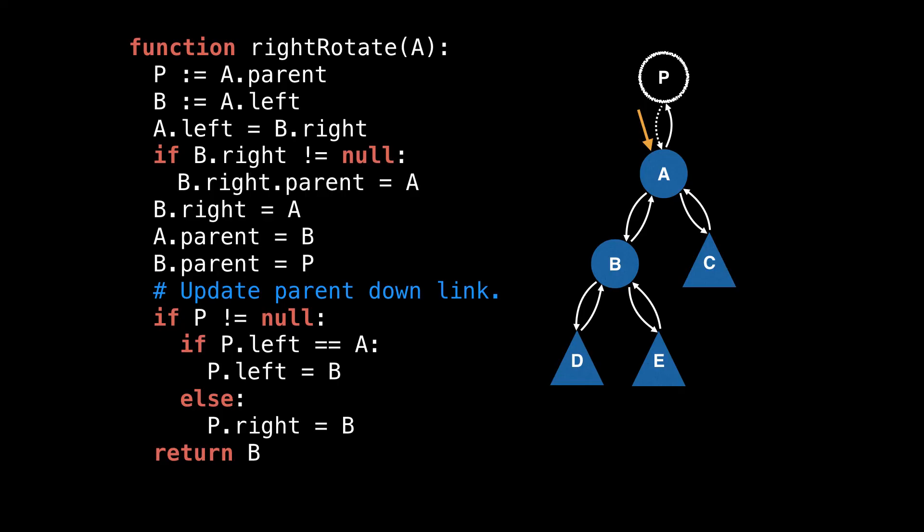In this case, where we also have a parent link, every node is in a sense, doubly linked. We start off with a pointer referencing A, and the first thing we'll want to do is also reference node B and node P, so we don't lose them as we shuffle around pointers. Next, we'll adjust the left subtree of A to make A's left pointer reference B's right subtree.